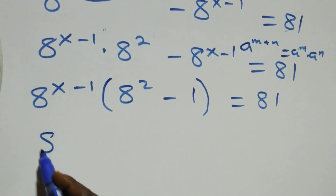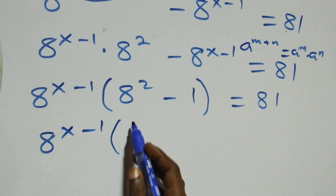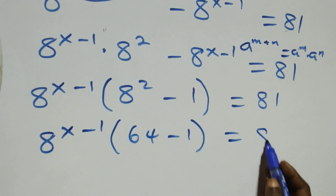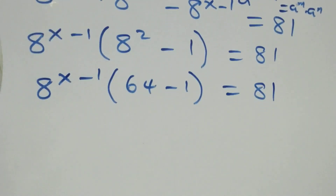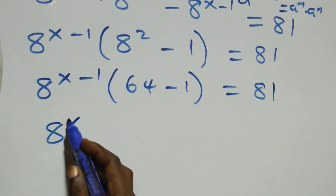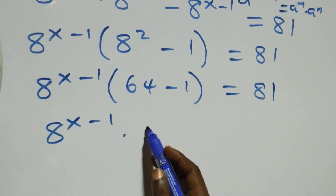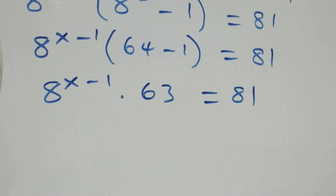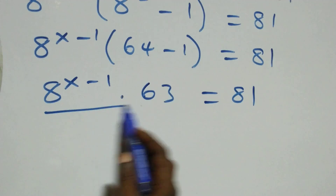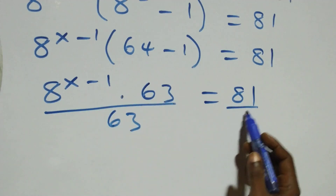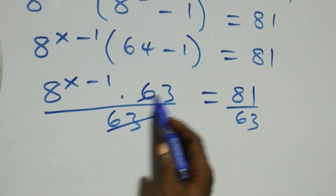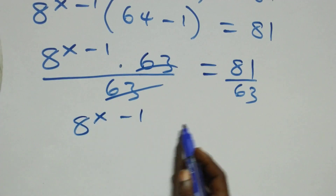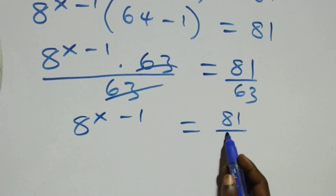This is the same thing as 8 raised to power x minus one, times the bracket 8 squared which is 64, minus one, equals 81. That is, 8 raised to power x minus one times 63 equals 81. Next step, we divide both sides by 63. The 63 cancels and we are left with 8 raised to power x minus one equals 81 over 63.